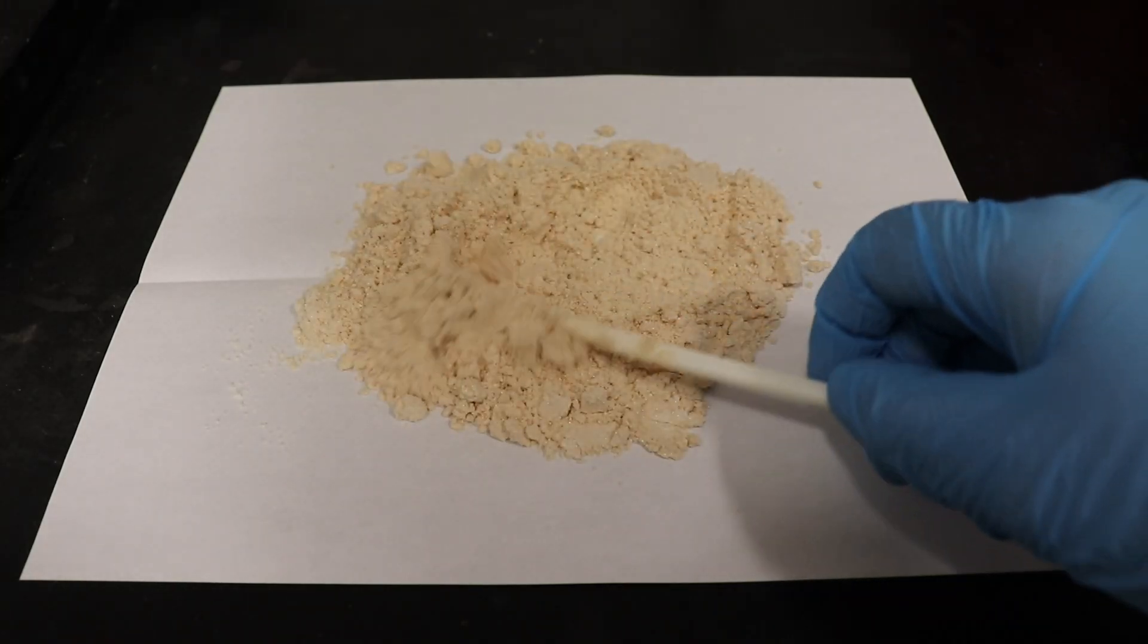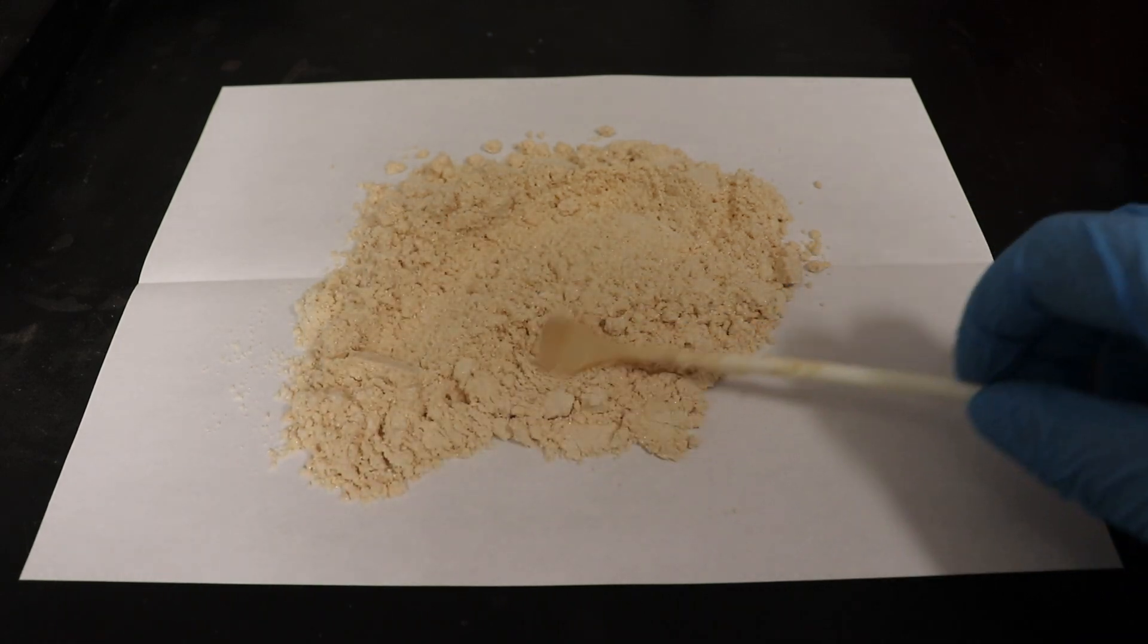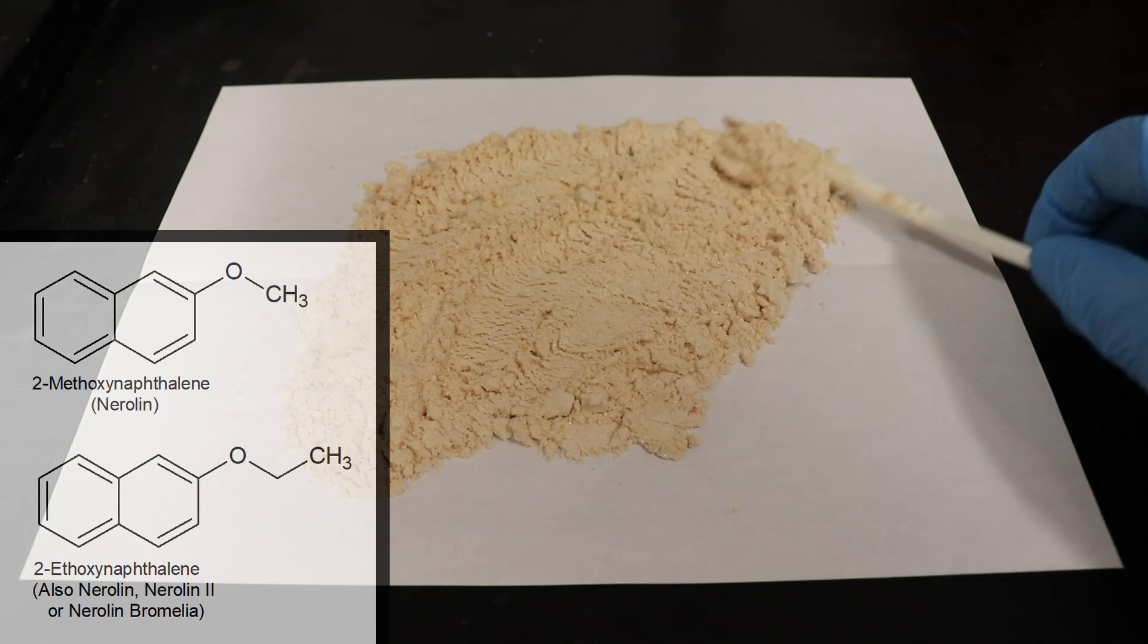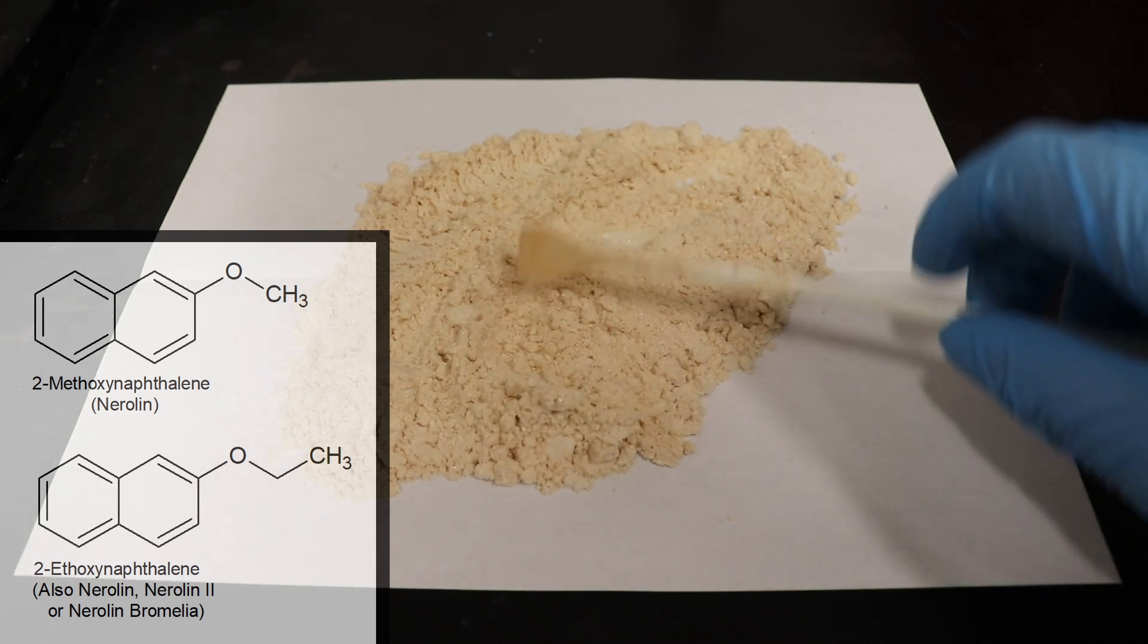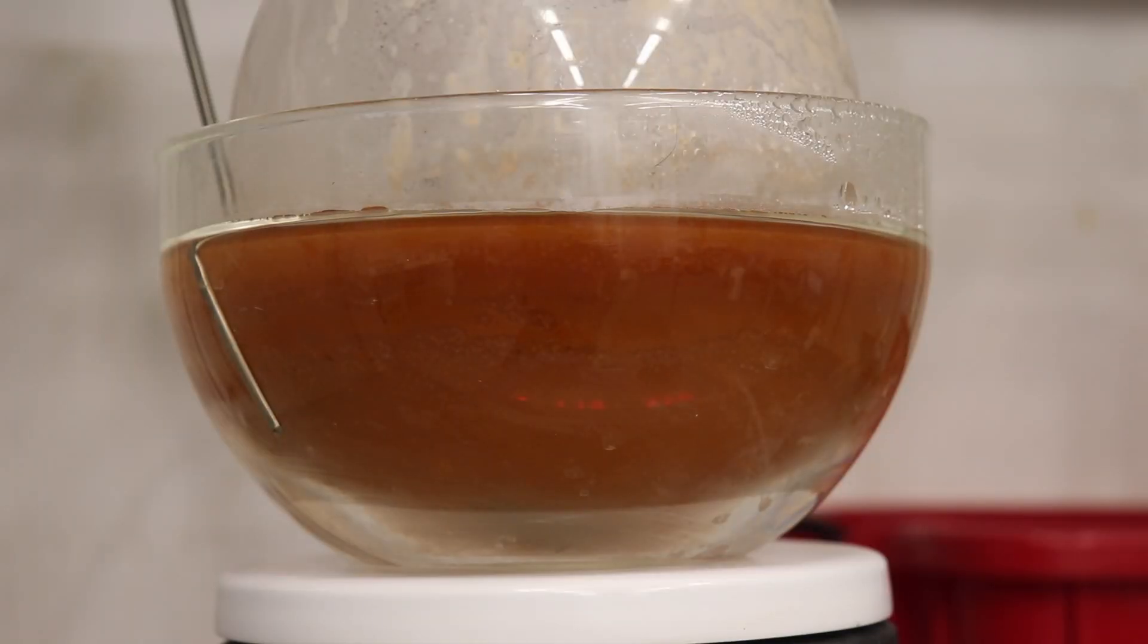2-methoxynaphthalene, also known as beta-napthol-methyl ether and methyl-2-napthyl ether, as well as nirlin, however both the ethyl and methyl-2-napthyl ethers seem to be referred to as nirlin. But regardless, it is a pleasant-smelling ether that finds use in perfumes, however I'm going to be using it as a building block in future organic syntheses.